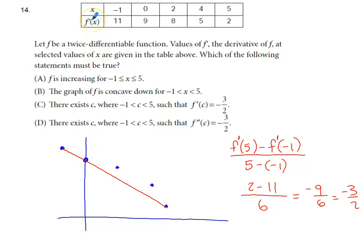Keep in mind, this is a graph of f prime. I didn't label it, but it is a graph of f prime. I know that my f prime values go through every value from 11 down to 2, but I don't know that they necessarily dip to negative 3 halves. Could they? Yeah, this graph could come through this point, quickly go down and then come back up. But I don't think that c has to necessarily be true.